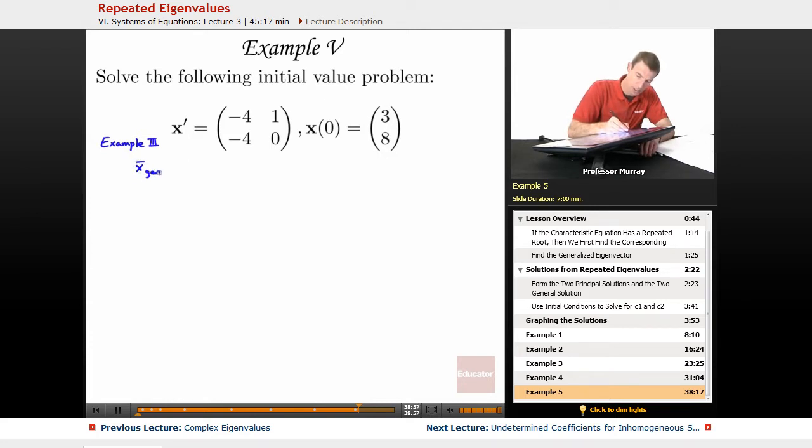We found the general solution x_general was c1 times e^(-2t) times (1, 2), plus c2 times the quantity t e^(-2t) times (1, 2), plus e^(-2t) times (0, 1).